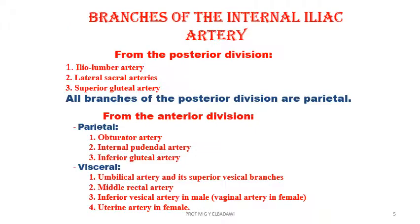In summary, from the posterior division: the ilio-lumbar, the lateral sacral, and the superior gluteal. From the anterior division: the obturator, the internal pudendal, and the inferior gluteal. The visceral branches are the umbilical, which gives the superior vesical and then terminates as a fibrous band up to the umbilicus, forming the medial umbilical ligament on each side of the midline.